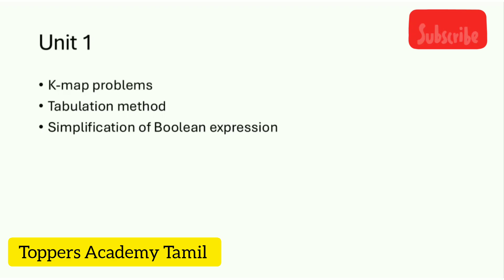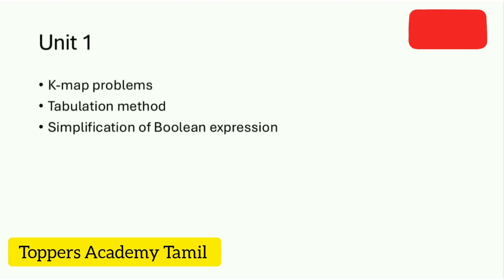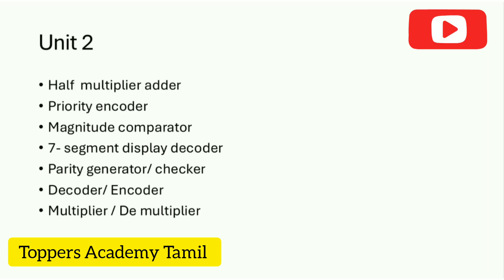Unit 1 covers KMAP problems — SOP and POS. The second question is the Tabulation Method. The third question is Simplification of Boolean Expressions. You can find all these questions in Unit 1.